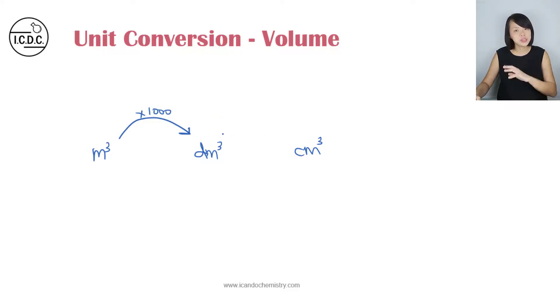From dm cube to cm cube, we need to multiply by another thousand. So if we were to convert meter cube to cm cube directly, we will need to multiply by a thousand-thousand, which is a million.